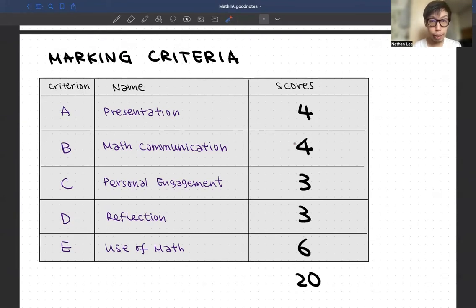Criterion B will be the math communication, also worth four points out of 20. Basically, this is a math exploration, so they expect you to communicate well in math calculations. But within that, they also expect you to use proper math notations.